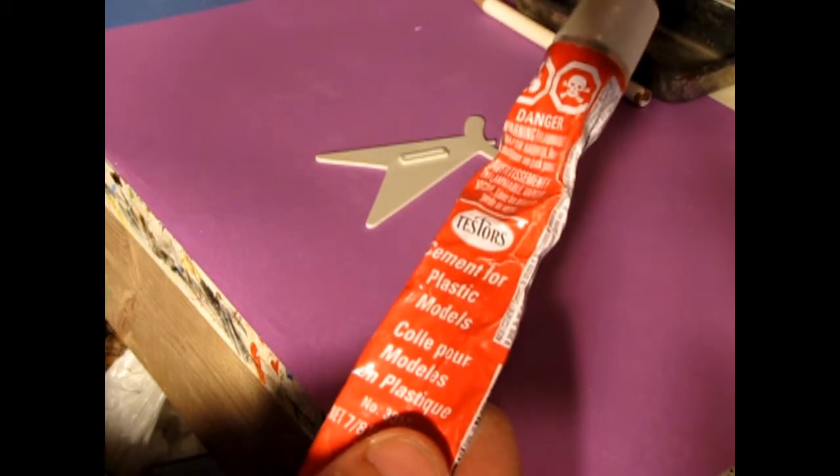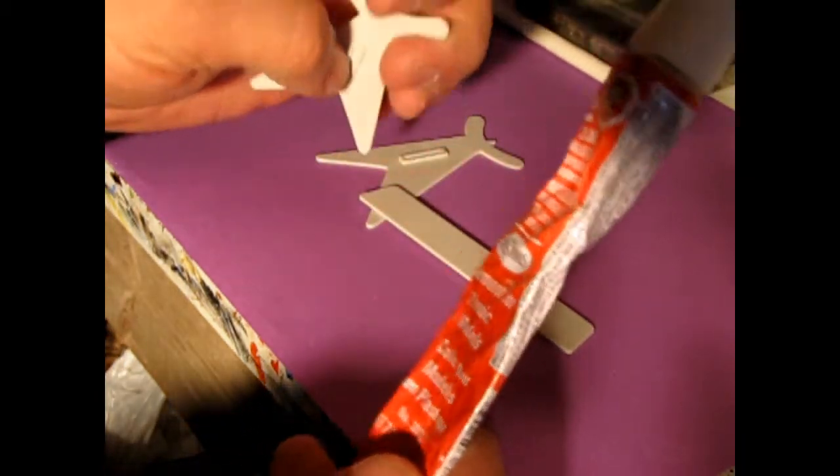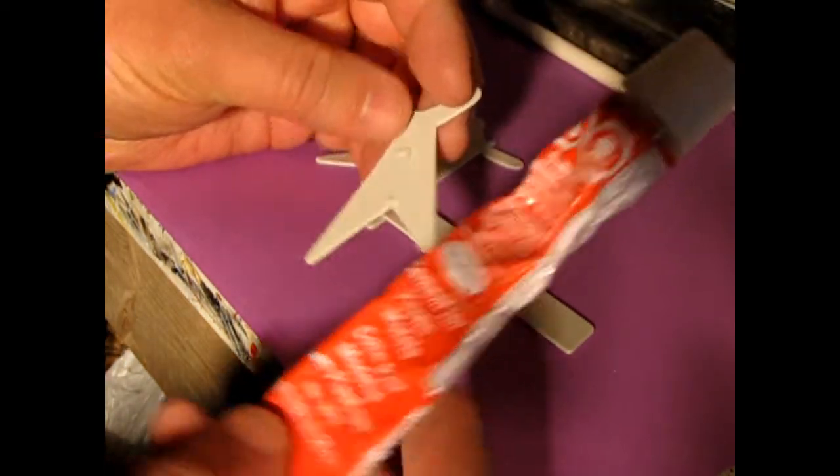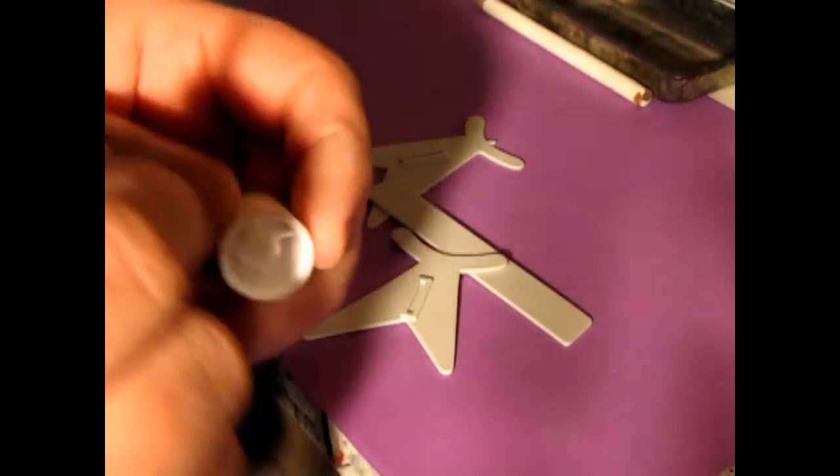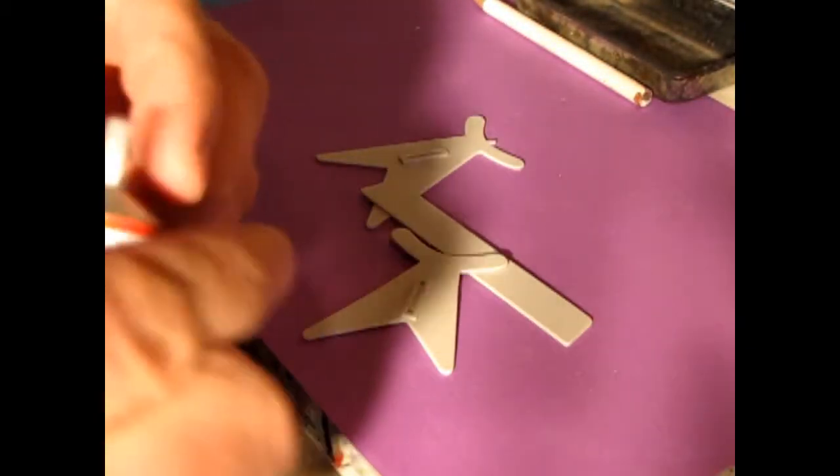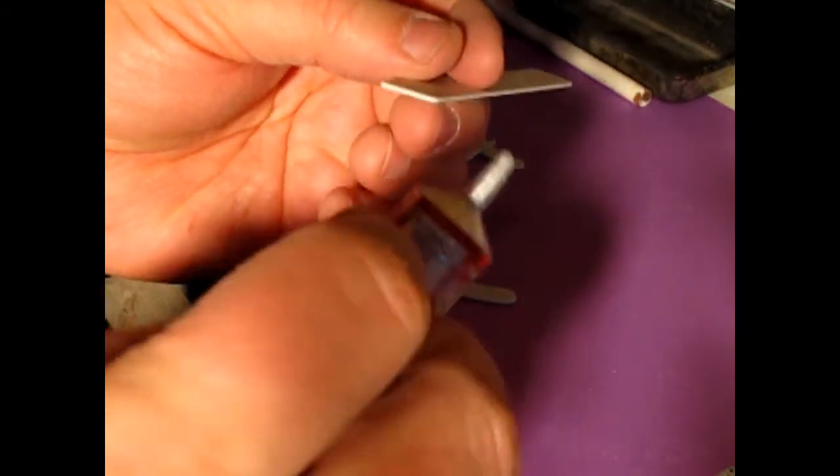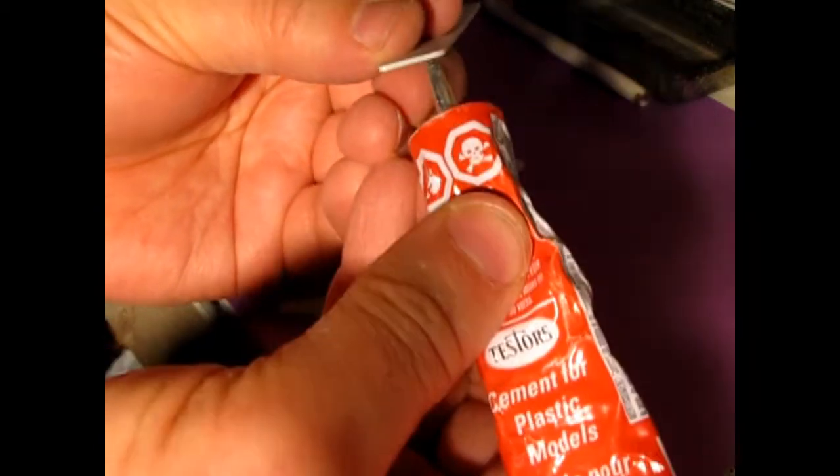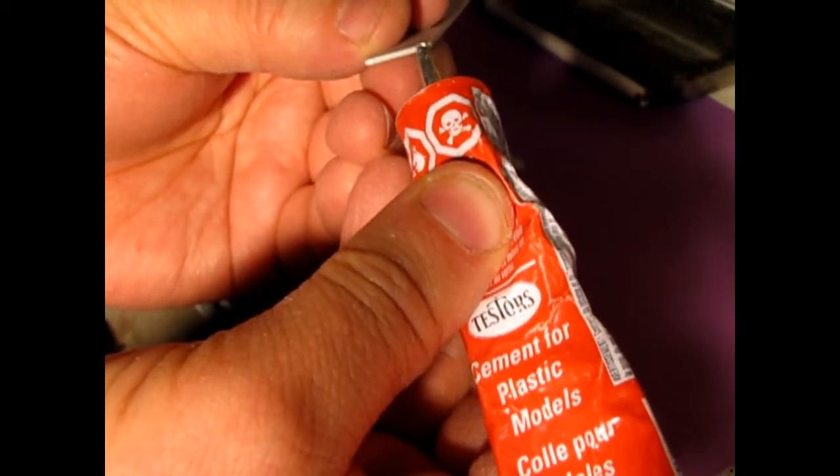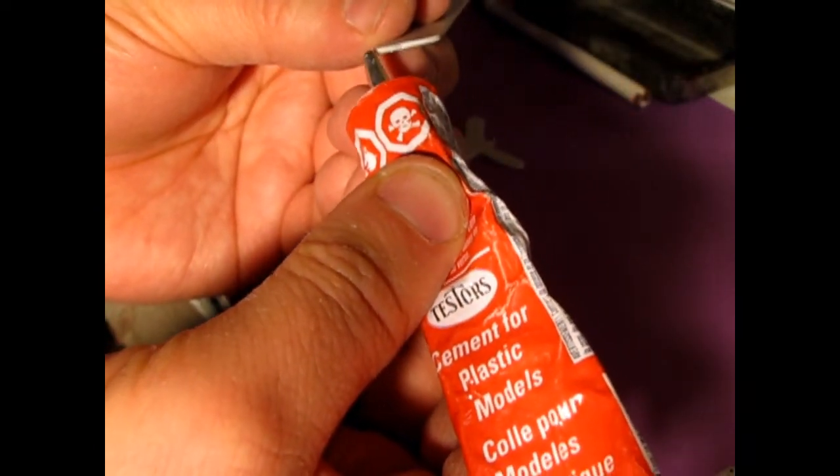So now I'm going to pretend that this is 1983. And we're going to use our old tester's model glue, the tried and true. Now I know some better stuff has come on the market since that time. But this stuff still works. So why not use it? So what I'm going to do is carefully get some glue out and go along this edge.